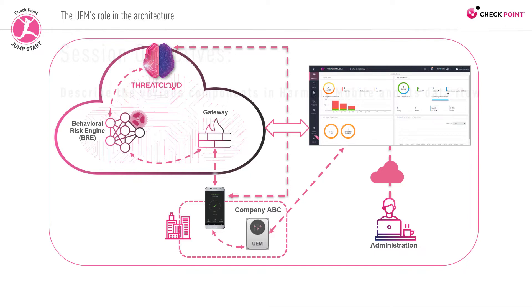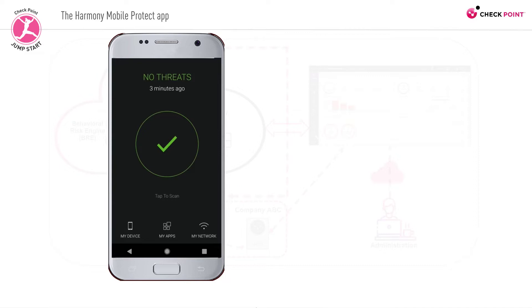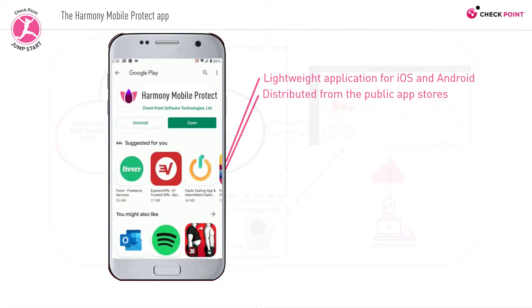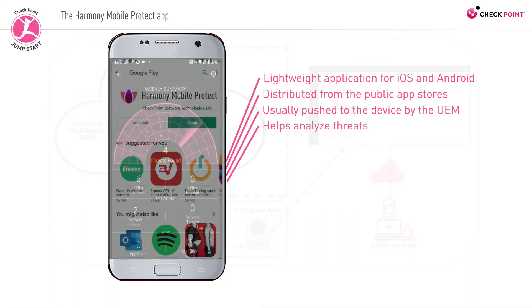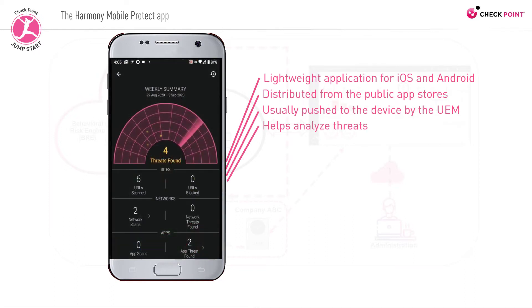We begin with the employee's mobile device where the Harmony Mobile Protect app is installed. It is a lightweight application for iOS and Android distributed from the public app stores. The app, which is usually pushed to the device by the UEM, gathers data from the mobile device and helps analyze threats in the enterprise environment, monitoring the device and providing data to identify suspicious or malicious behavior.